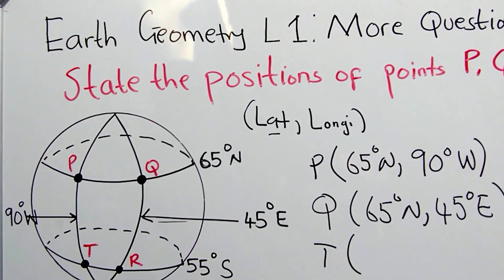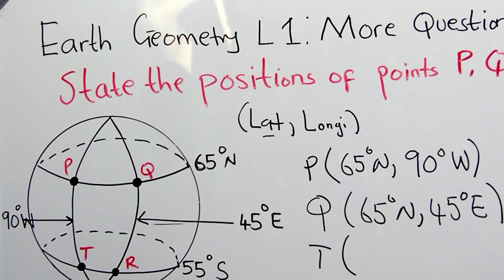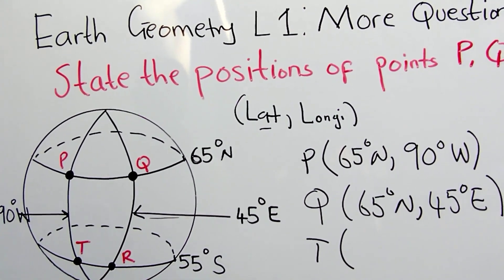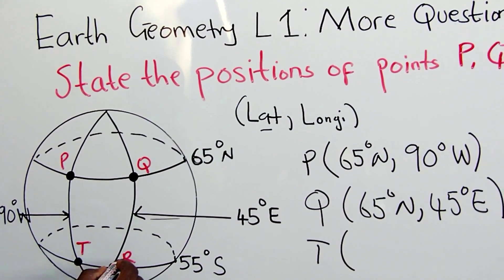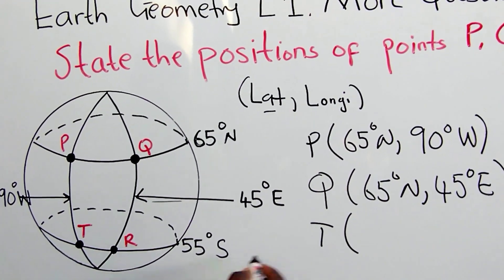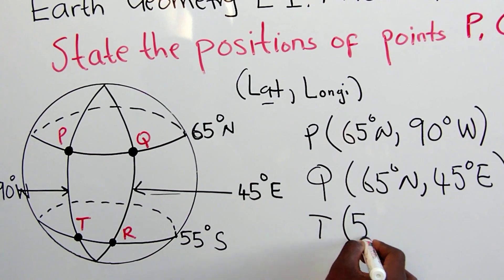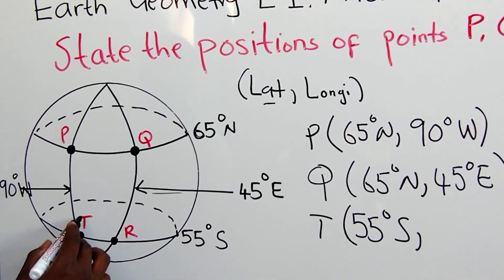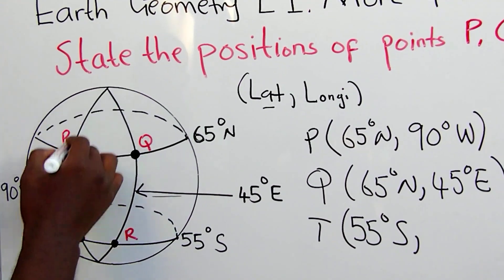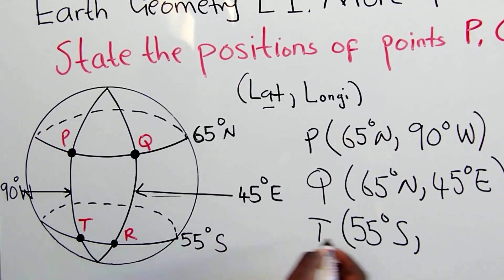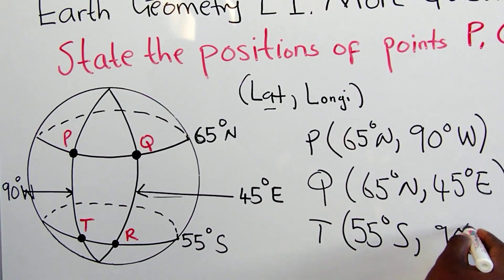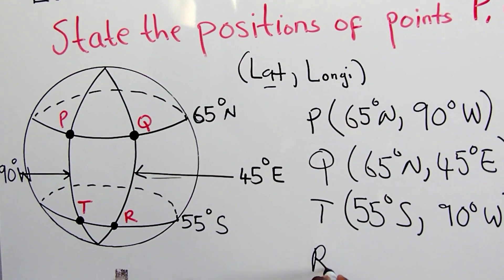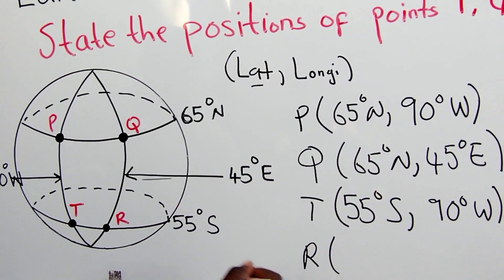For point T, it is lying on latitude 55 degrees South. T and R are lying on the same latitude. The longitude for T is 90 degrees West. So the position of point T is (55°S, 90°W).